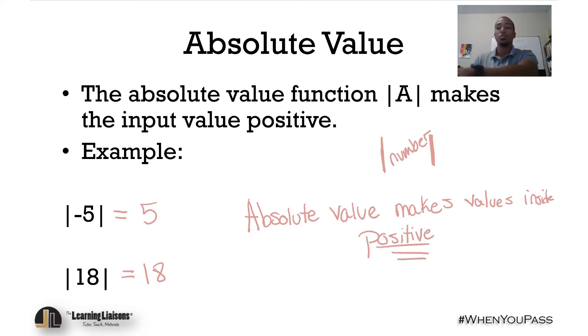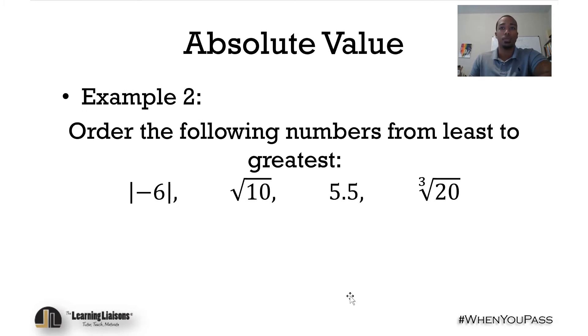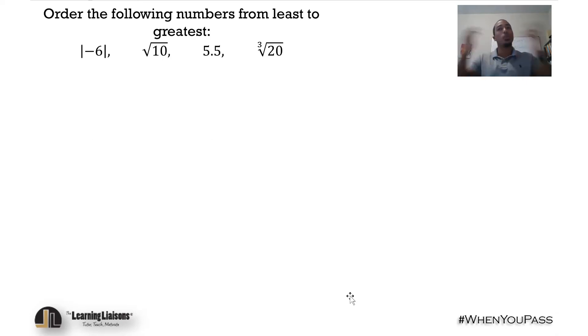Moving on into our next example, we want to start looking at what some exam questions may look like. We want to order the following numbers from least to greatest: we have the absolute value of negative 6, the square root of 10, 5.5, and the cube root of 20. Let's tackle this.